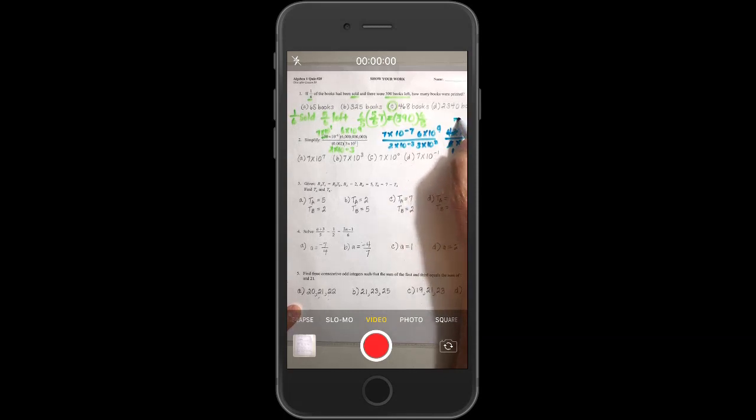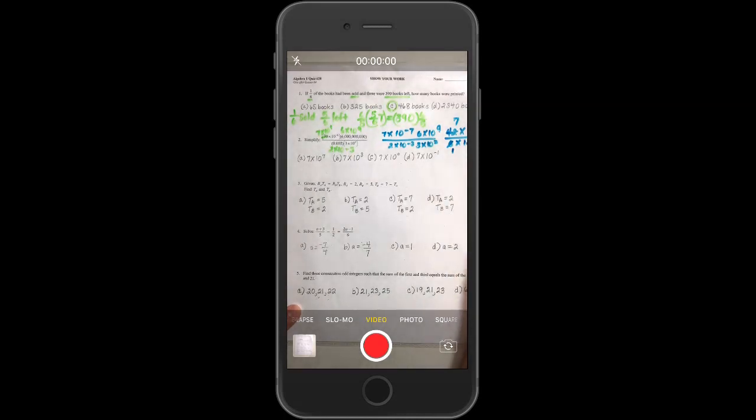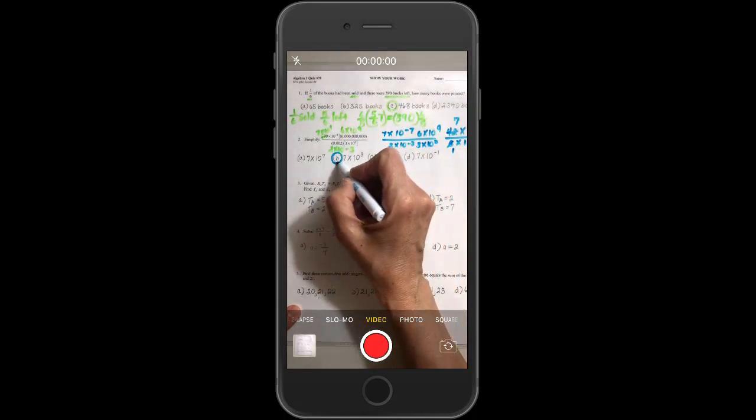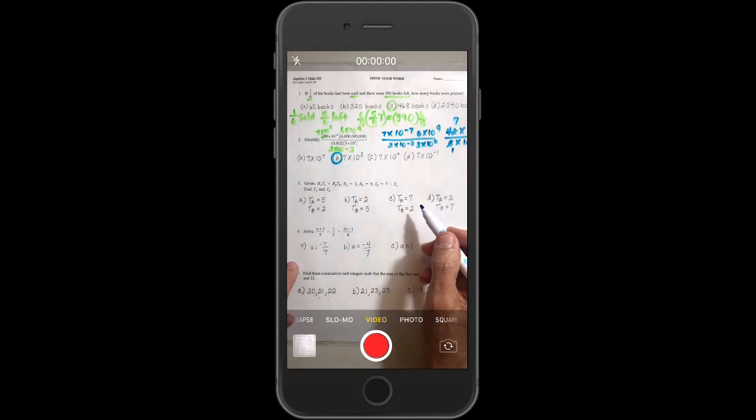And we can cancel out, that gives us seven. We move this to the top, it says positive one. And so, the correct answer is B, seven times ten to the third.